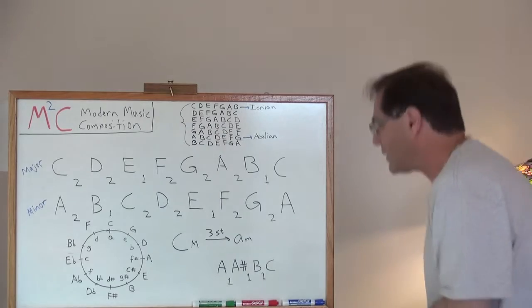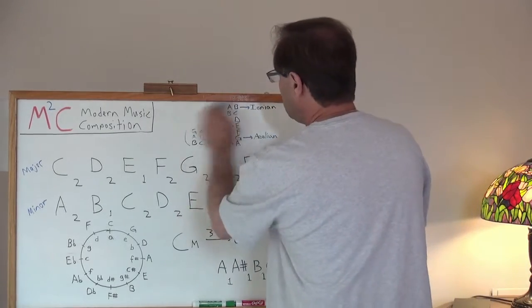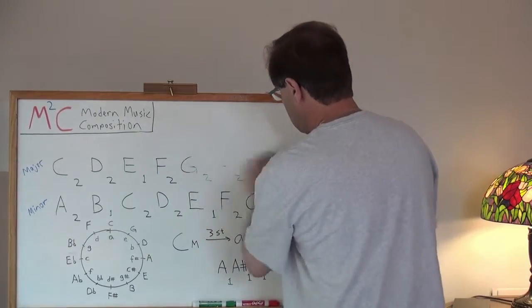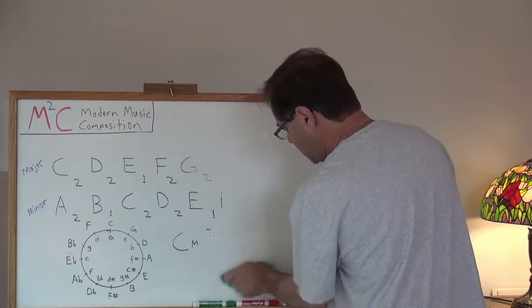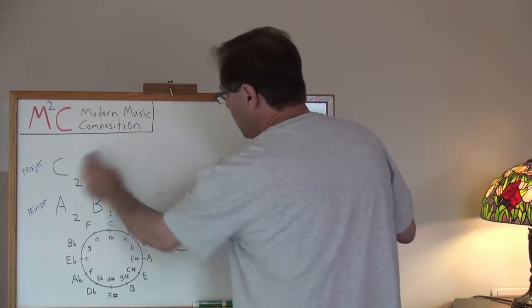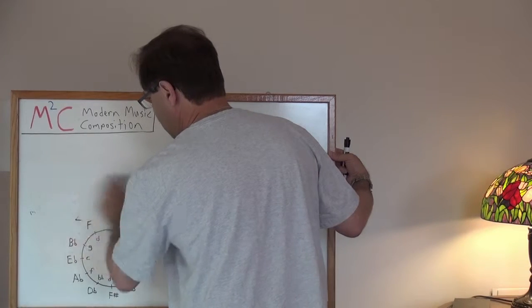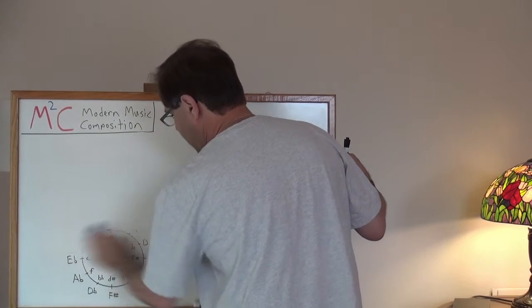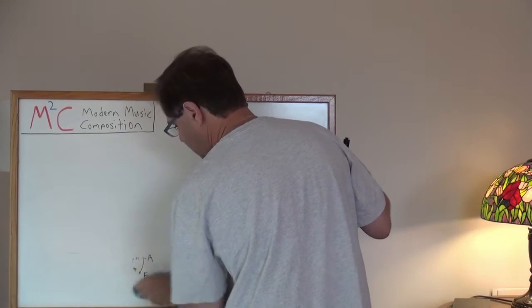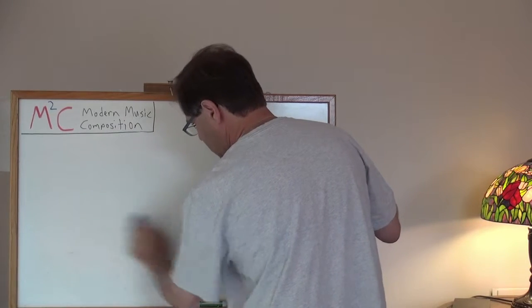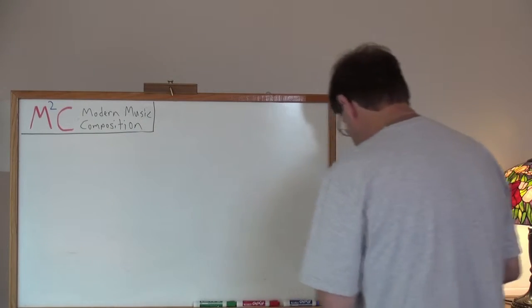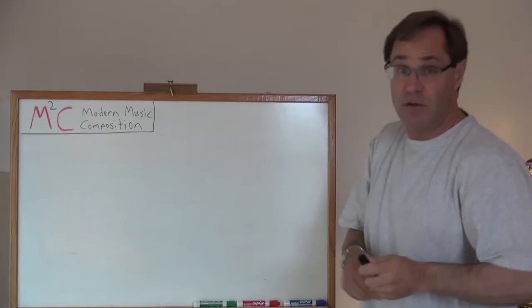Let me just erase the board here. And as we do the proof, I'm going to bring in some new nomenclature that's used in set theory, and a little bit different way of looking at the chromatic scale. Because we all know that the diatonic scale now is a subset of the chromatic scale.